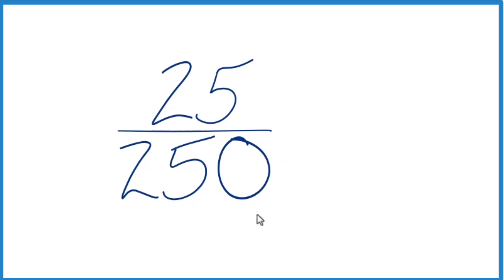What we want to do is find another fraction that's equivalent to 25 divided by 250. It has the same decimal value, it's just that we've simplified or reduced it down to lowest terms.